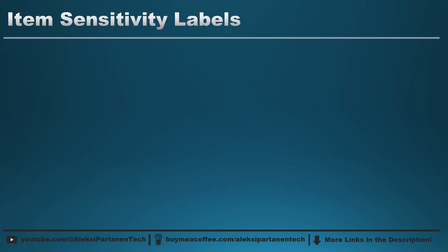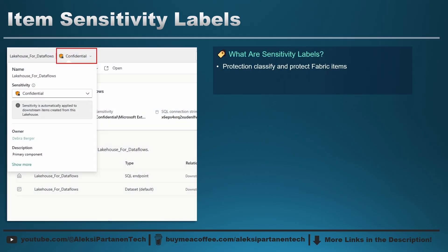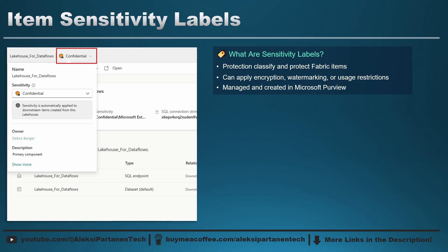Next, we have sensitivity labels that can also be applied to different Fabric items. Sensitivity labels help you classify and protect your Fabric items and data. They can apply things like encryption, watermarks, and usage restrictions — especially when content is exported outside of Fabric, like to an Excel or PDF file. These labels are created and managed in Microsoft Purview, which is part of Microsoft's data governance tools, which means you cannot create new labels inside Fabric. You can only apply sensitivity labels made by the people who manage your Microsoft Purview.